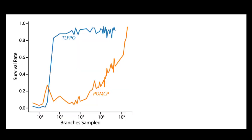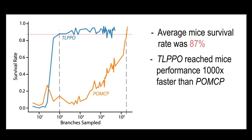The average survival rate collected from the mice experiments was 87%. We performed a simulation to assess the computational effort required by POMCP and TLPPO to achieve the same survival rate. The agent using TLPPO did it with over 1,000 times less computation than its counterpart.